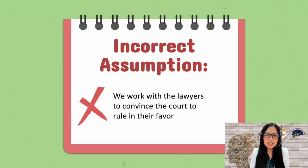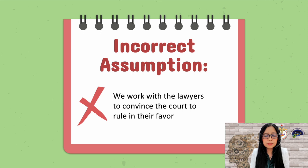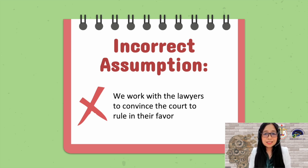Another misconception is that we work with the attorney to convince the court to rule in their favor. We must remember that we have to remain objective and check our own biases. For example, we may be too quick to judge an evaluee with a murder case, or assume a therapeutic role for an alleged victim of rape. But we should always go back to the purpose of the evaluation: to assist the court, not the lawyer, not the evaluee.